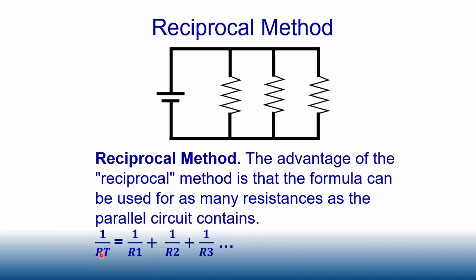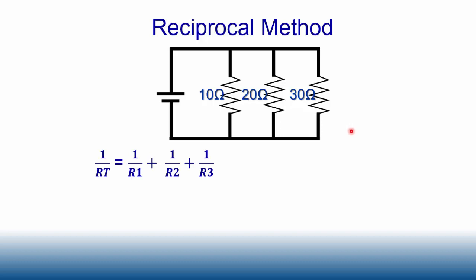The reciprocal method can be used for as many resistors as the parallel circuit contains. The formula is: 1 over RT equals 1 over R1 plus 1 over R2 plus 1 over R3, and so on. Here I have resistors of 10, 20, and 30 ohms, which we plug into the formula as 1/10 plus 1/20 plus 1/30.